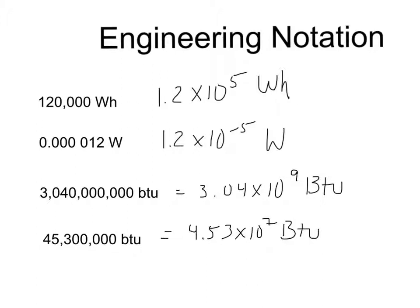Now, engineering notation has the same format — A times 10 to the N — but in this case the exponent has to be a multiple of 3. So: 3, 6, 9, 12, 15, and so on, and also negative 3, negative 6, negative 9, negative 12, and so forth.